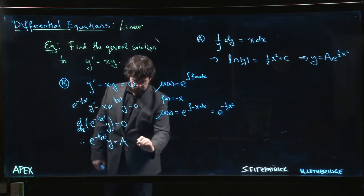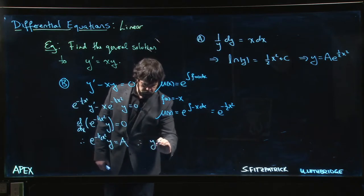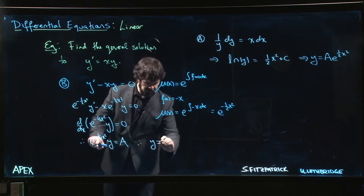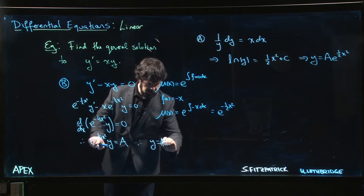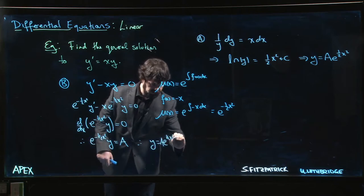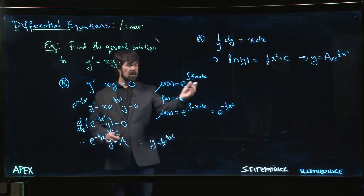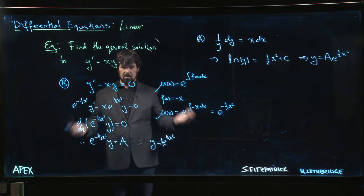Solve for y. Multiply both sides by e to the 1 half x squared. A e to the 1 half x squared. And we get the same answer as before, as we should.